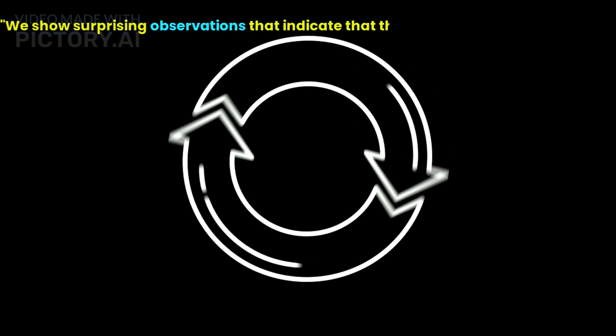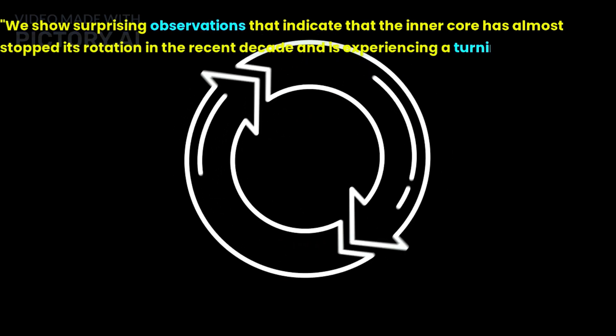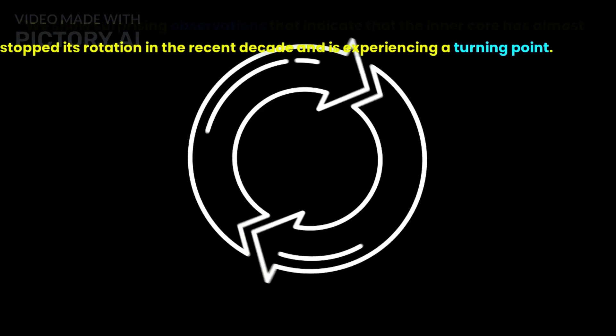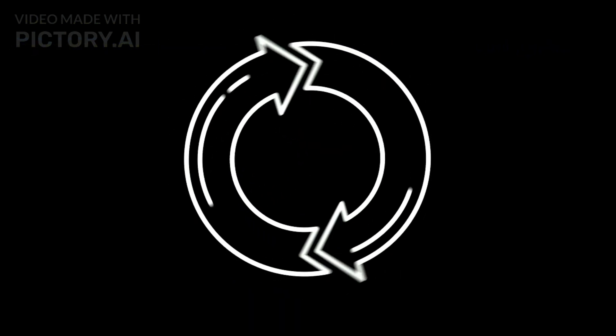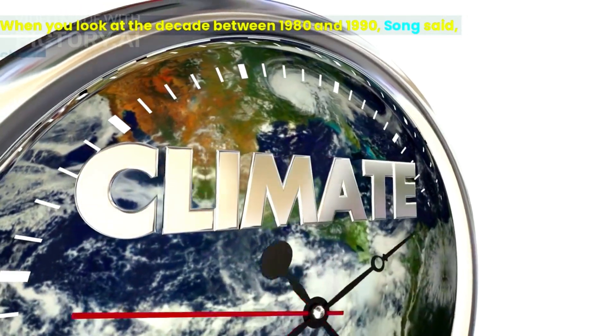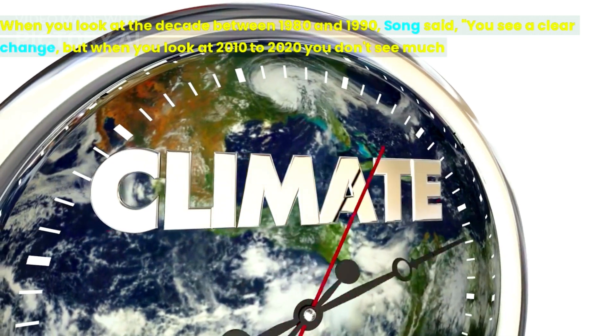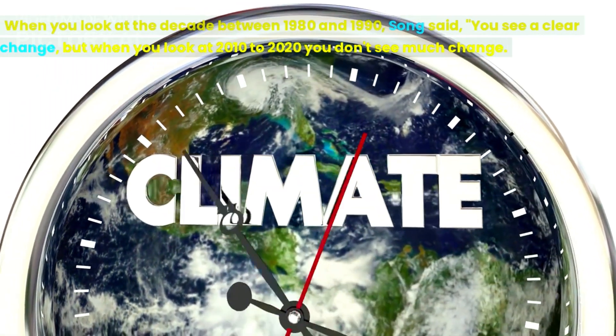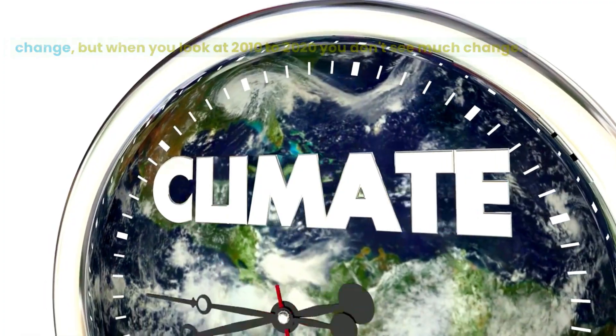We show surprising observations that indicate that the inner core has almost stopped its rotation in the recent decade and is experiencing a turning point. When you look at the decade between 1980 and 1990, you see a clear change, but when you look at 2010 to 2020 you don't see much change.